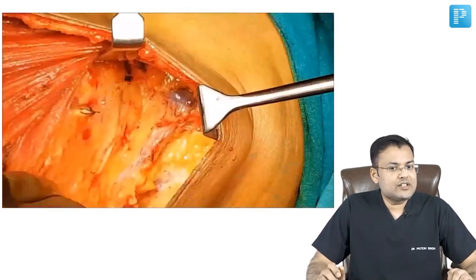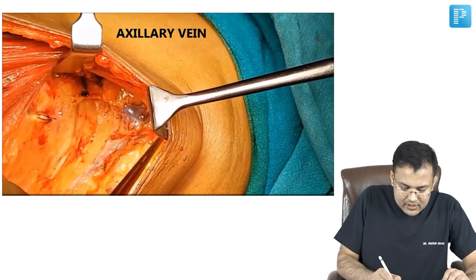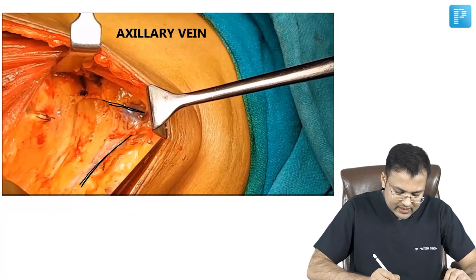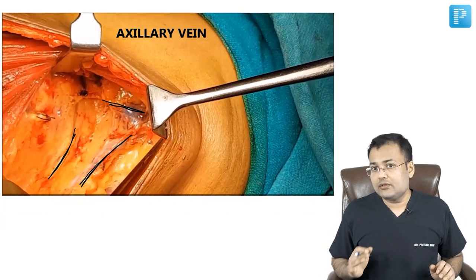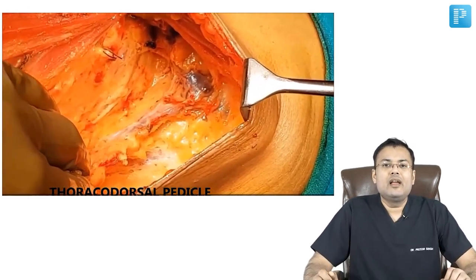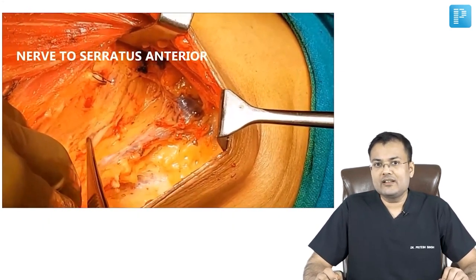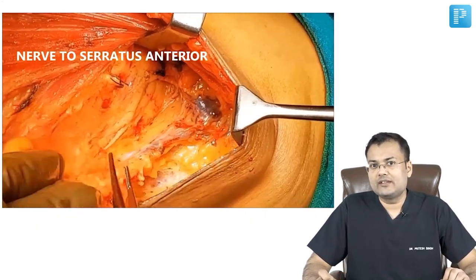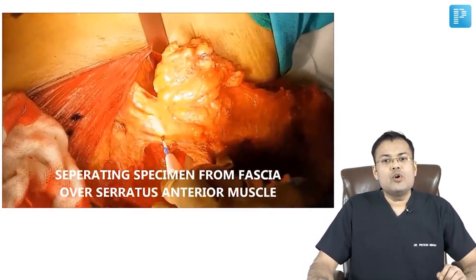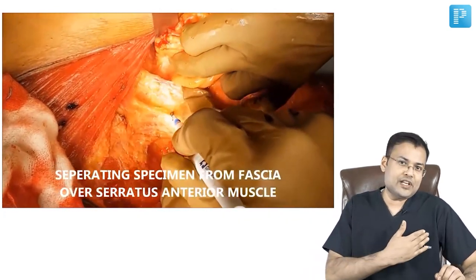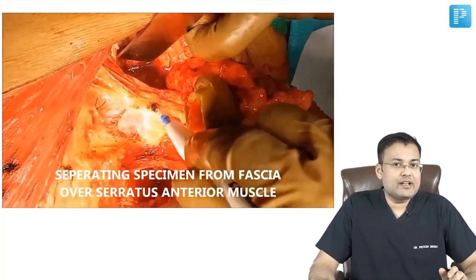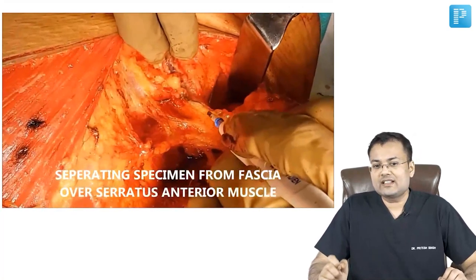The axillary dissection is being done. You can identify the axillary vein, the thoracodorsal pedicle, and the nerve to serratus anterior — the long thoracic nerve. If the long thoracic nerve is sacrificed, there is winging of the scapula. The specimen is now being separated from the fascia over the serratus anterior muscle.